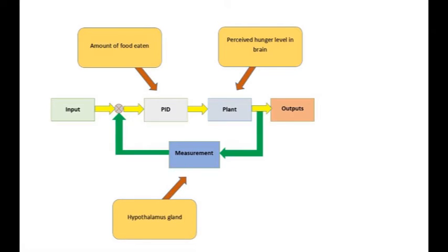The controller in this system is biological feedback. Human appetite is controlled by many different parts of the body with different roles and urgencies. How much food is currently in the stomach is the dominant controller influencing appetite hormone production.